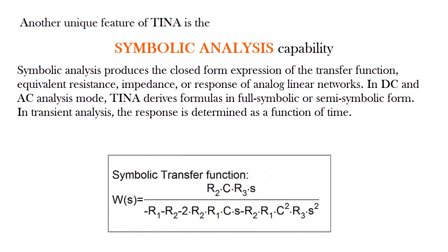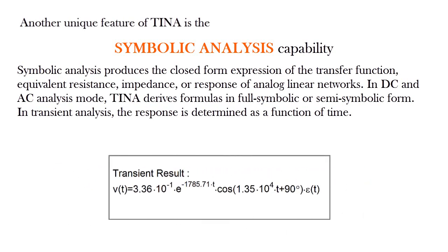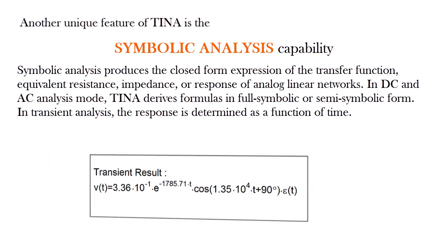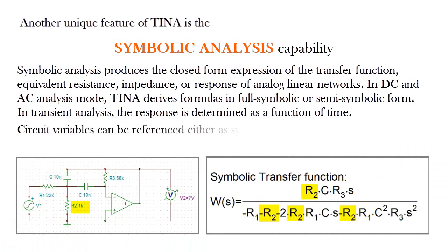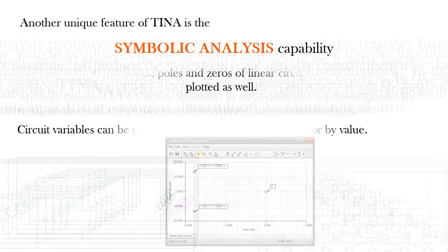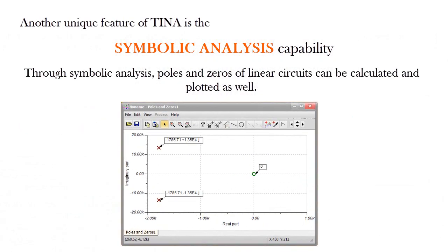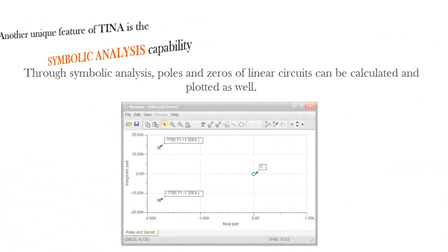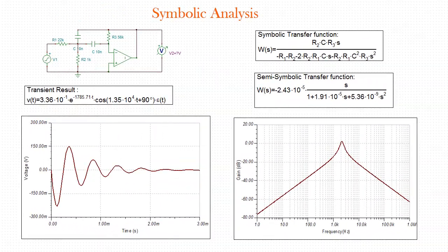In DC and AC analysis mode, TINA derives formulas in full symbolic or semi-symbolic form. In transient analysis, the response is determined as a function of time. Circuit variables can be referenced either as symbolic names or by value. Poles and zeros of linear circuits can also be calculated and plotted. For example, let's see the symbolic and numerical analysis results of an active bandpass filter.